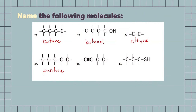Next, we have 1, 2, 3, 4 carbons. We have our triple bonded carbon here, so since it's between the first ones, we're just going to call this one butyne. Next, 1, 2, 3 carbons, so it's going to be a type of propane. We have our thiol group there, so we're going to call this one propylthiol.